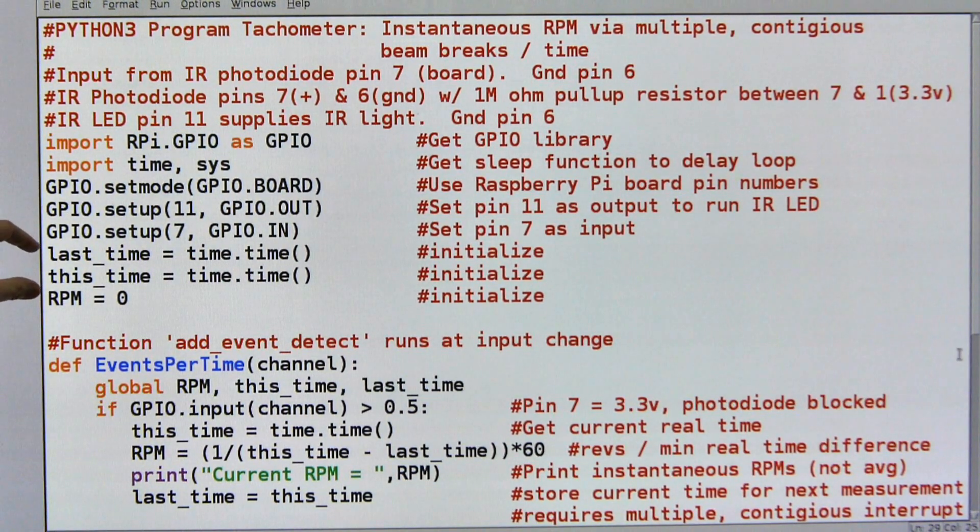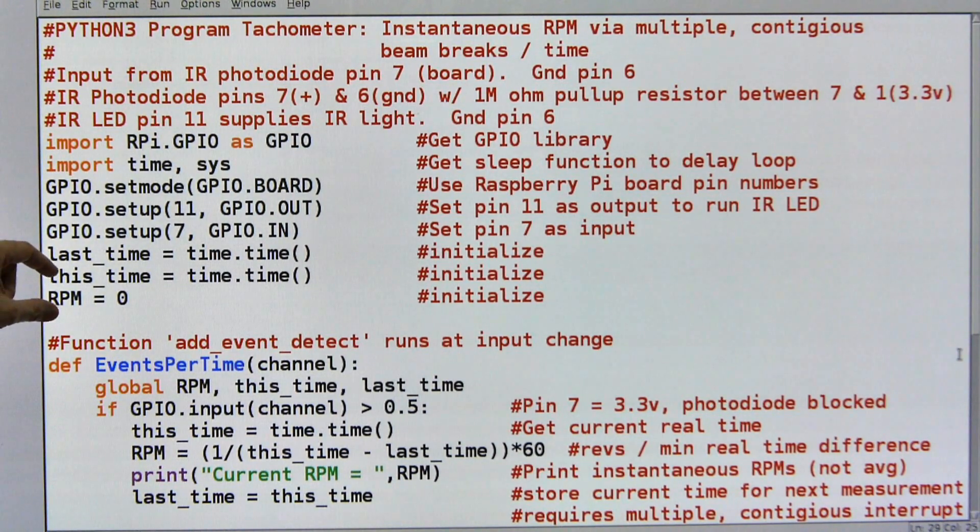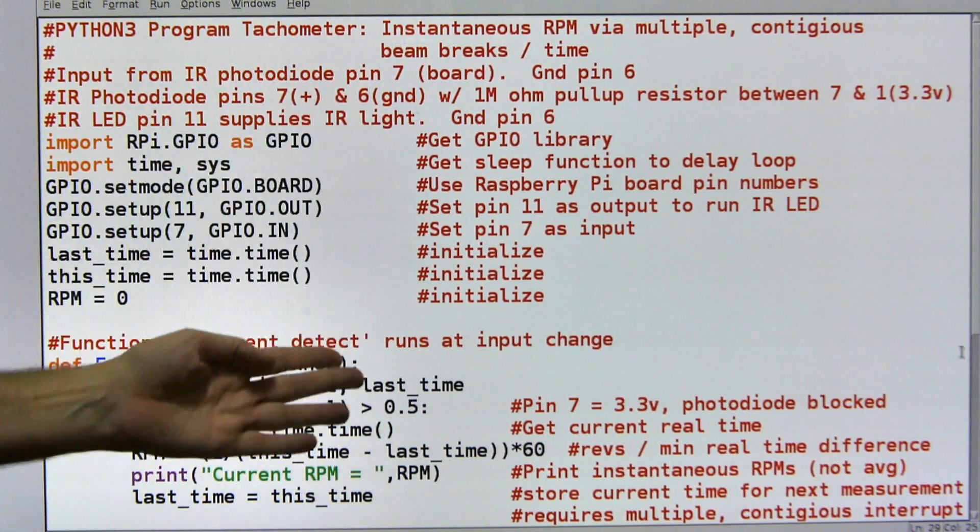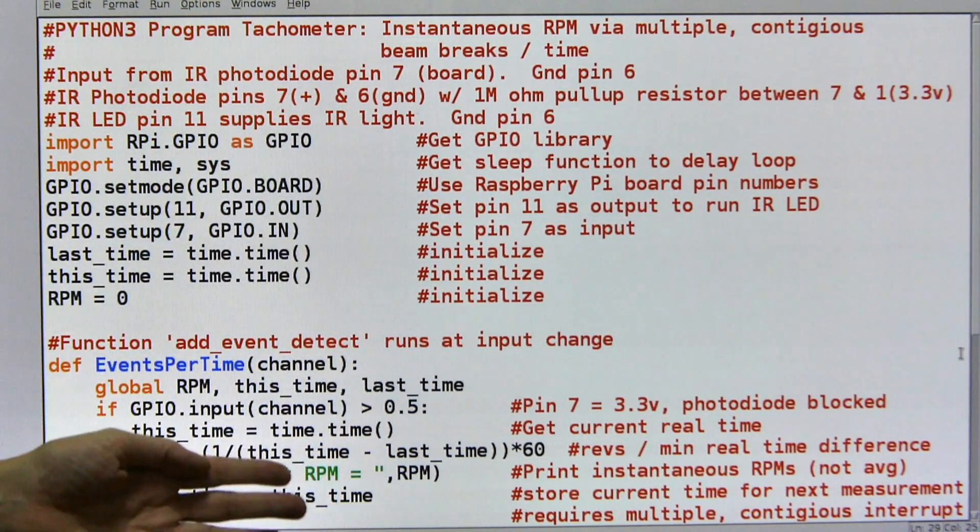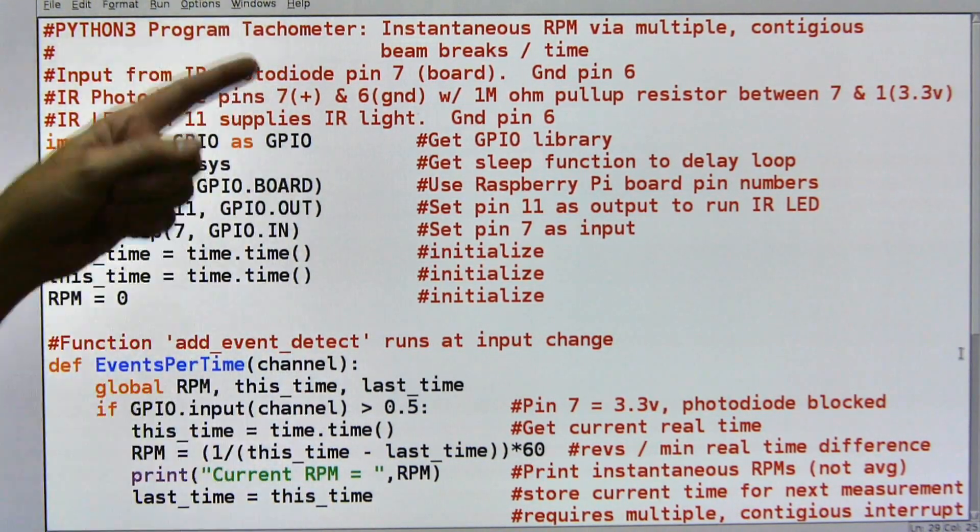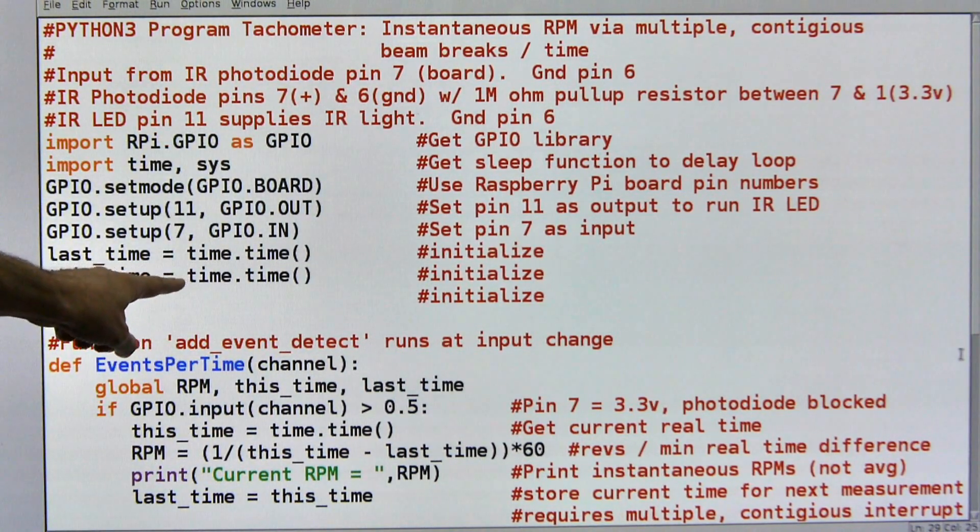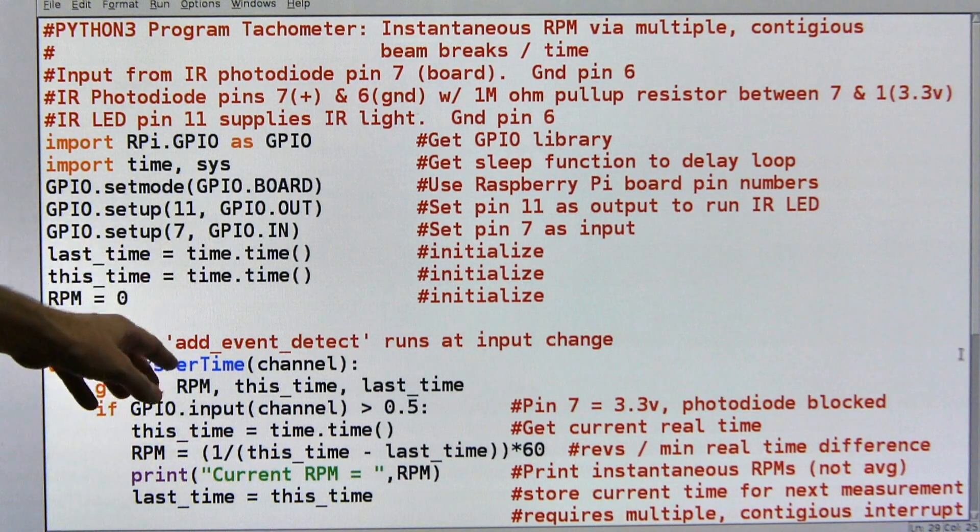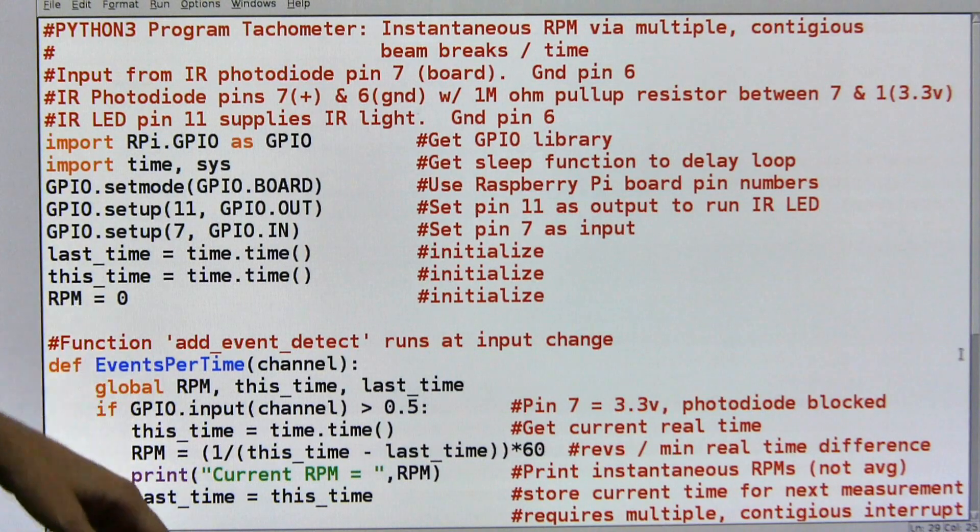I've got a couple of variables because we're working with time this time. In the past, like when you count, you don't have to worry about how much time, but now we're counting per time and that's important so we have to keep track of the last time we saw the hit and the current time when we saw the hit because that's how we're going to know how fast the wheel is turning or whatever we're measuring. And here I just initialized them, I just set them to something. So they had to be set to something so I set them to the current time. And then the RPM I set to zero.